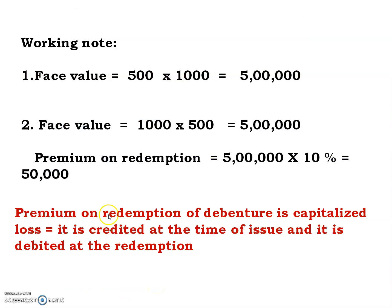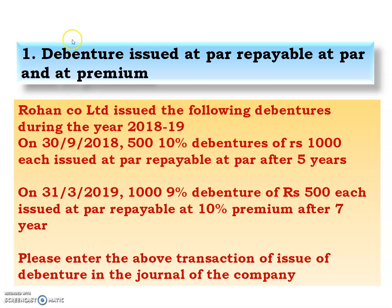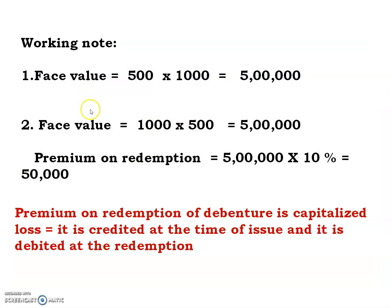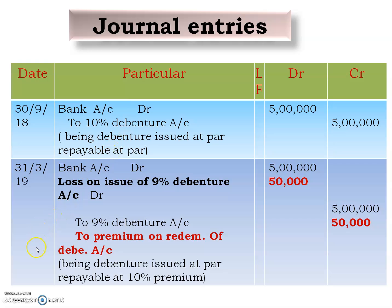So this is how we pass journal entries when debentures are issued at par and repayable at par, and also when issued at par and repayable at premium. Students, thank you very much. If you have any queries, please ask in the comment box. Please subscribe, like, share, and comment. Thank you very much.